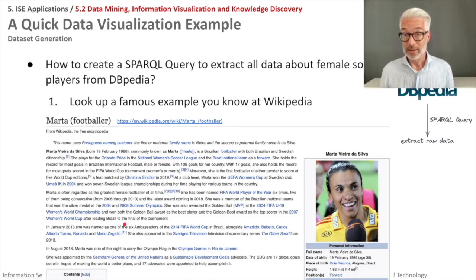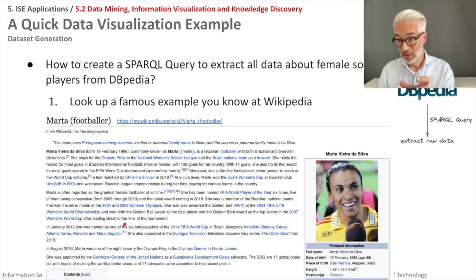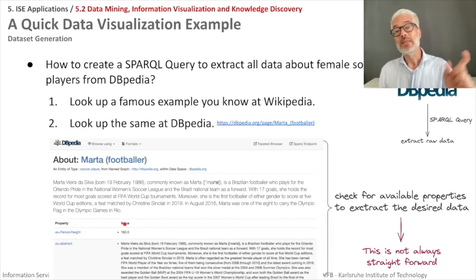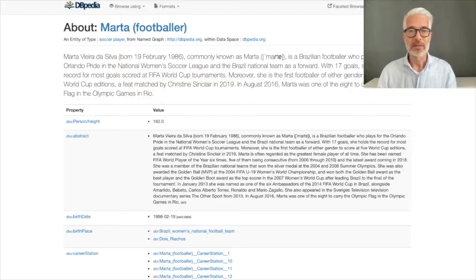To get data out of these knowledge bases we first look up a sample of the data. Starting with DBpedia, you begin with Wikipedia because there you quickly find what you're looking for. For example, Marta Vieira da Silva — one of the most famous female football players of all time. You look her up on Wikipedia, get her URI, then directly get the DBpedia URI by using the same suffix with the DBpedia prefix. In DBpedia you can find what properties and SPARQL queries to use.